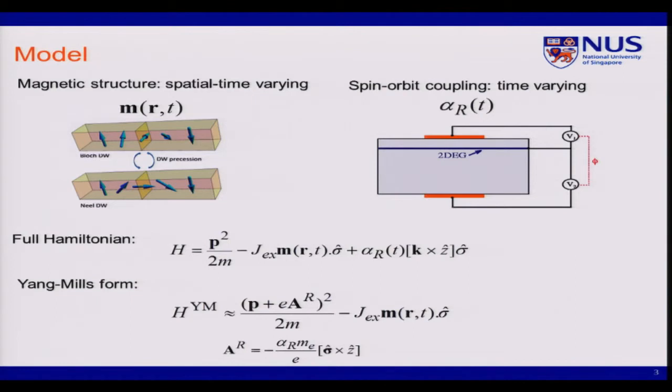We got the full Hamiltonian like this. Because the Rashba spin-orbit coupling is linear in the momentum, we can conveniently write the Hamiltonian in terms of the Yang-Mills form. So we got the Rashba gauge, which is non-Abelian.